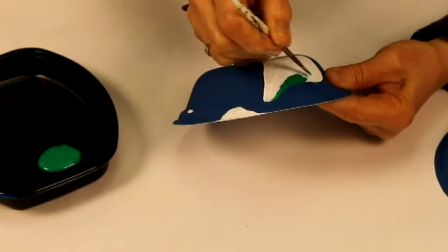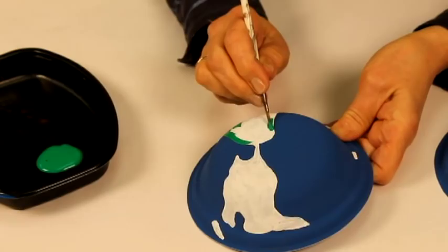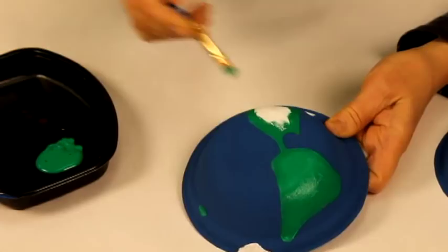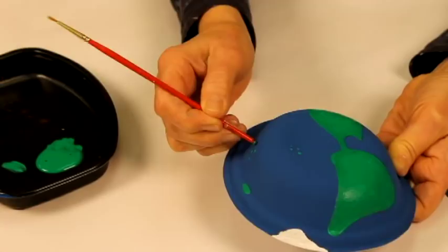When the white paint is dry, paint the continents green with the exception of the South Pole and Greenland. I like to use a fine brush for the details and a larger brush for the rest. I paint the islands making dots with the tip of the brush handle.